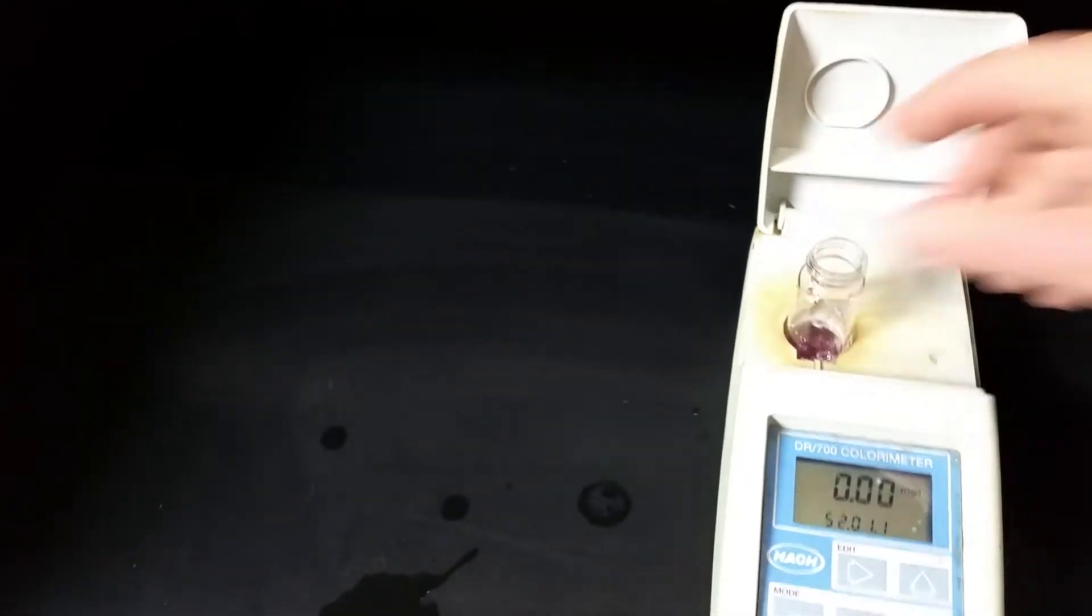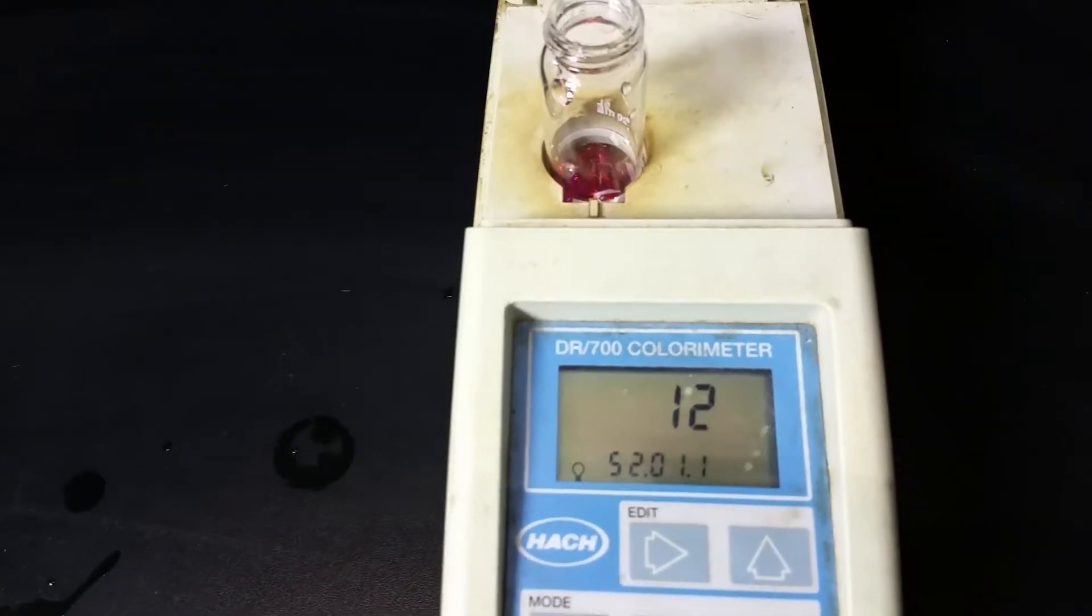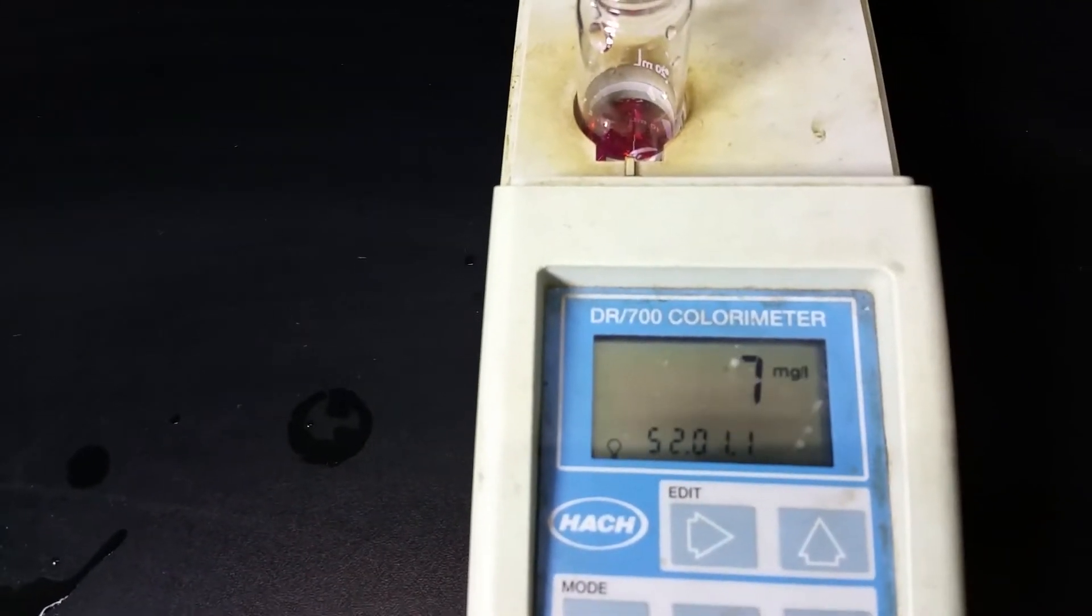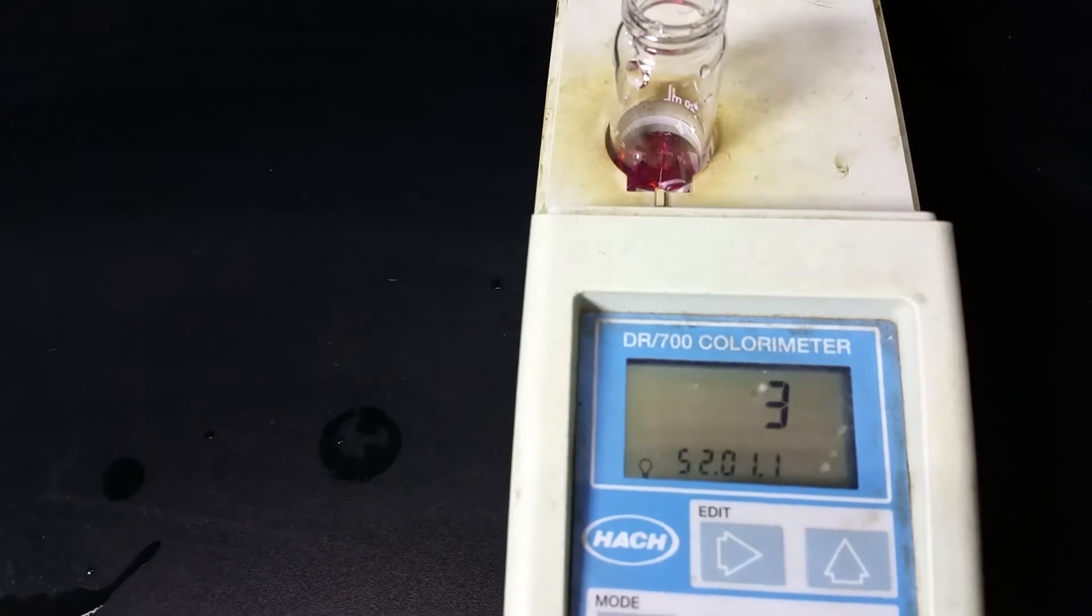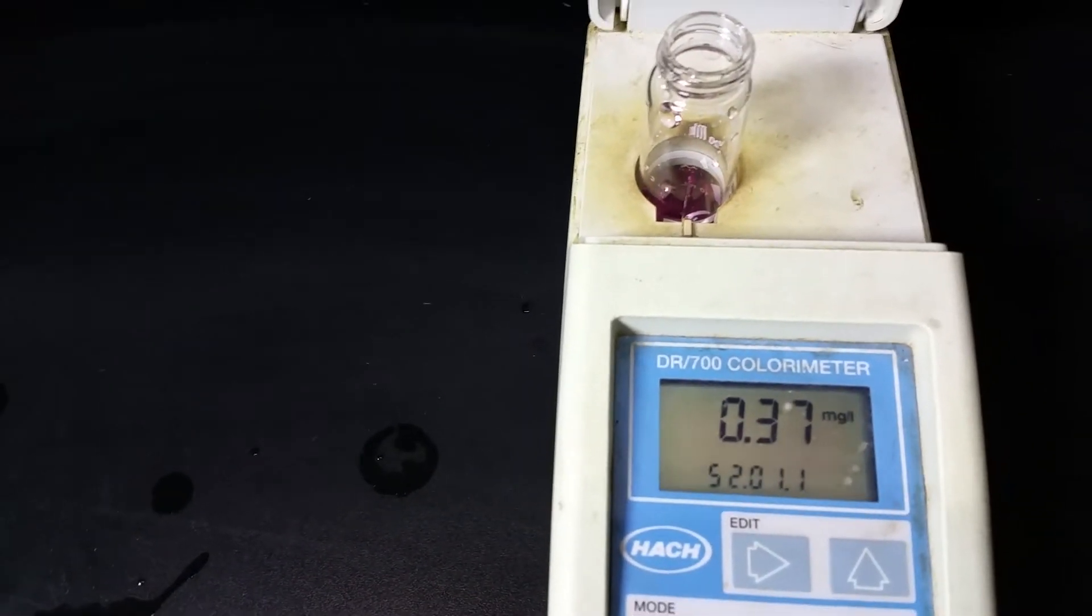Now it's already been zeroed out. So now it's going to read free residual chlorine levels in it. We're going to read that, have a countdown. 0.37. Okay, so there's our levels for free residual chlorine as of right now.